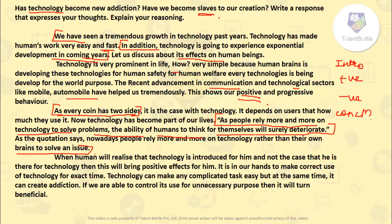The conclusion: when humans realize that technology is introduced for them and not that they exist for technology, it will bring positive effects. It is in our hands to make correct use of technology. Technology can make complicated tasks easy but at the same time it can create addiction. If we are able to control its use for unnecessary purposes, it will be beneficial. Form very small but grammatically correct sentences and use phrases — do not use very difficult words you don't know, but use phrases, as they are more effective.